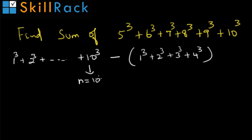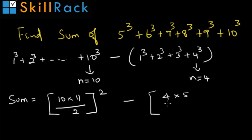In the first series, the n is equal to 10 and in the second series, n is equal to 4. We can write sum as 10 into 11 by 2 the whole square minus 4 into 5 by 2 the whole square because in the second series, n is equal to 4.